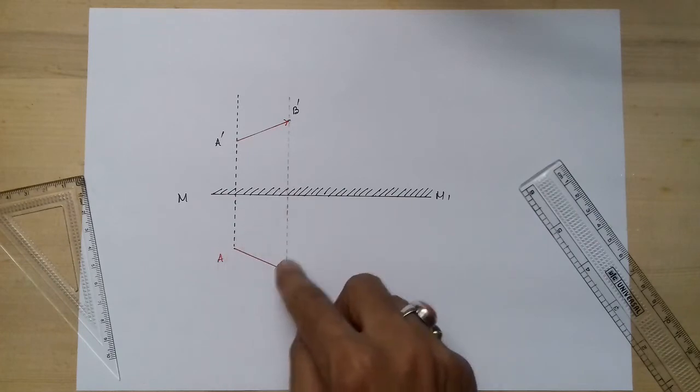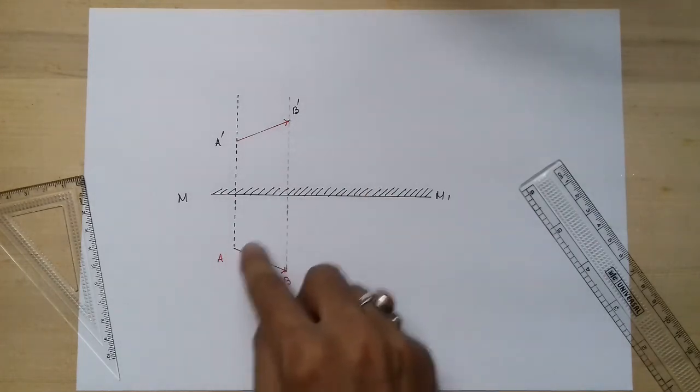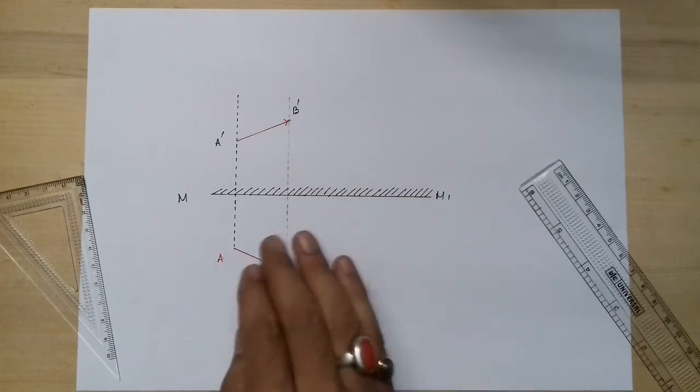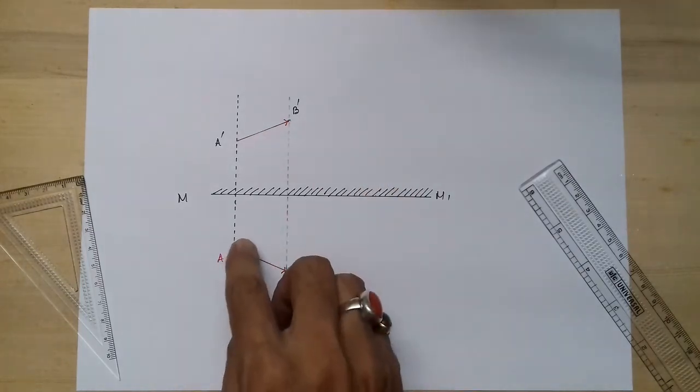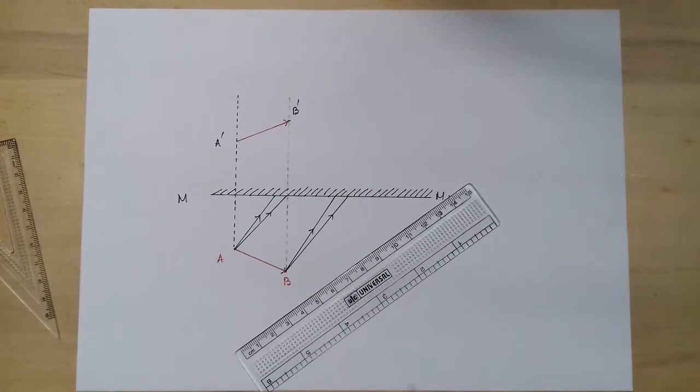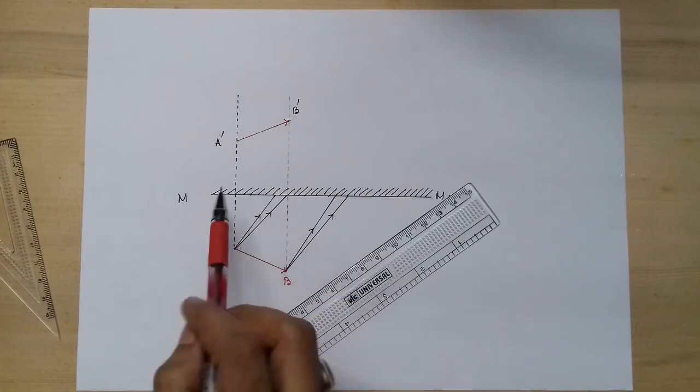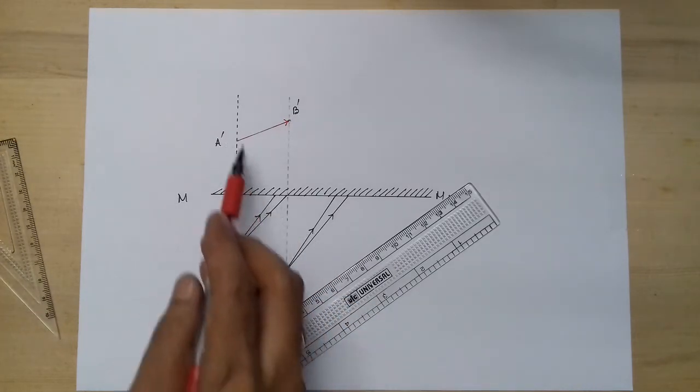Otherwise, many incident rays are available, but if you draw so many incident rays, the drawing will be clumsy. So let me complete the incident rays from this and from that. These are the incident rays. Now what we will do is join these two points and those two points.